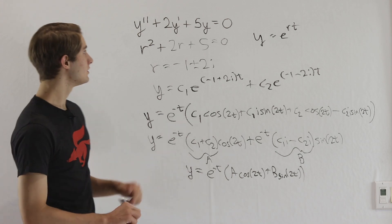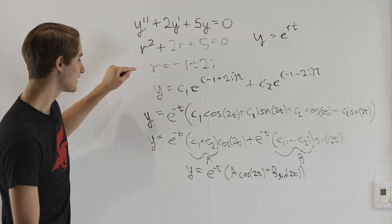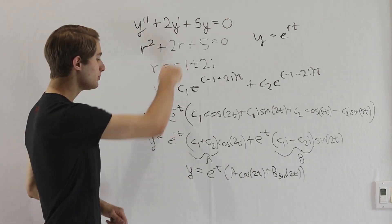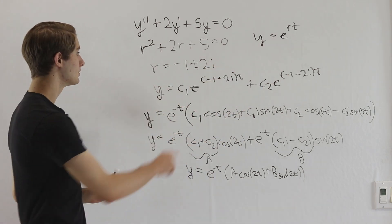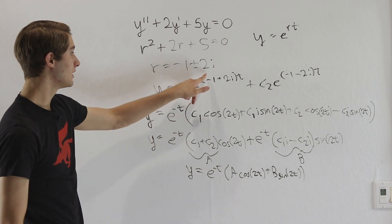So in general, if you're trying to solve a homogeneous equation and you get complex roots, the real part is going to end up as e to the power of rt, just like we expected. But when we look at the complex part, here we have 2.